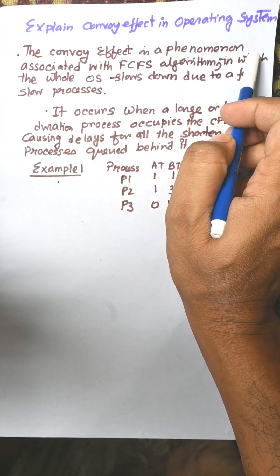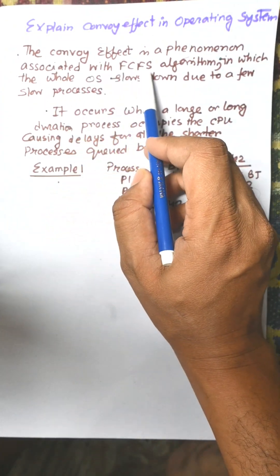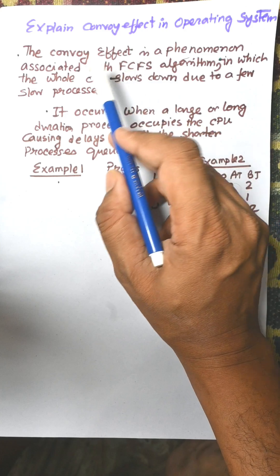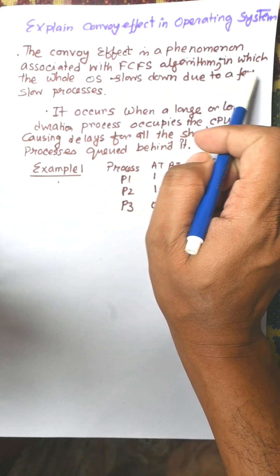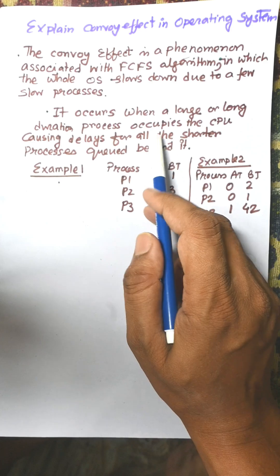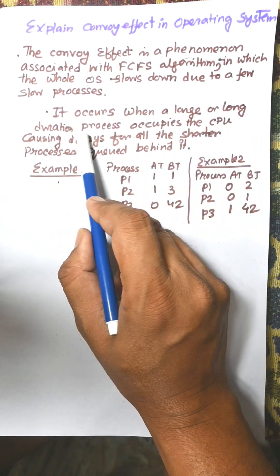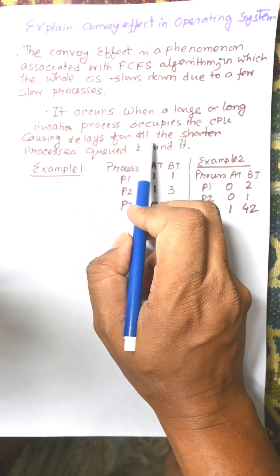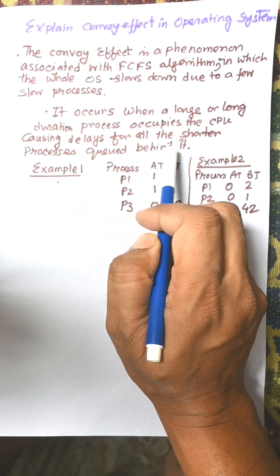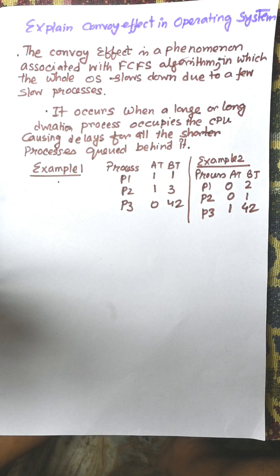Convoy effect is a phenomenon associated with the First-Come-First-Served (FCFS) algorithm in which the whole operating system slows down due to a few slow processes. It occurs when a large or long duration process occupies the CPU, causing delay for the shorter processes queued behind it. This is known as the Convoy effect.